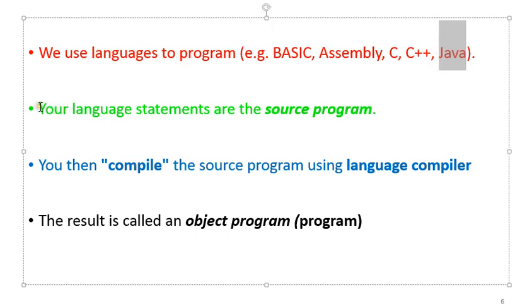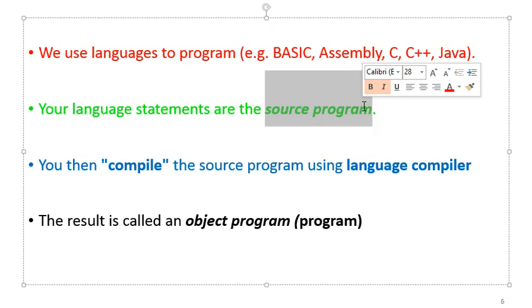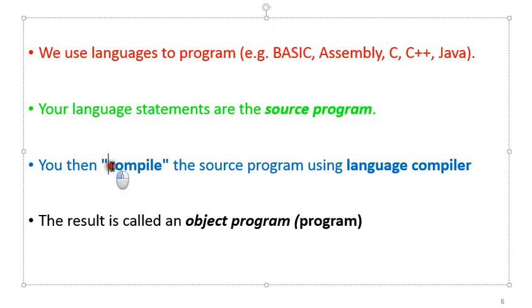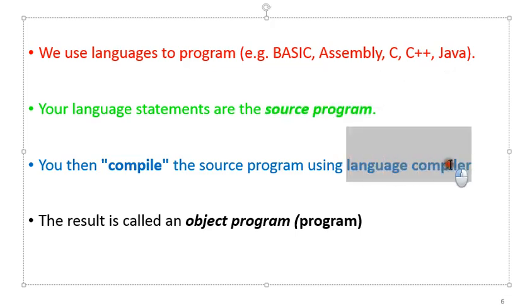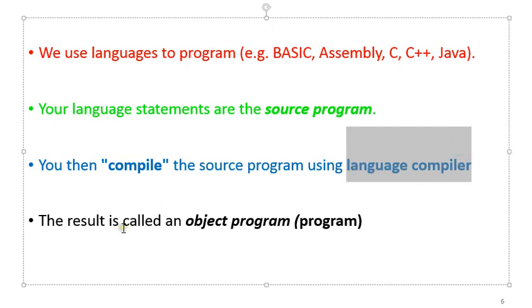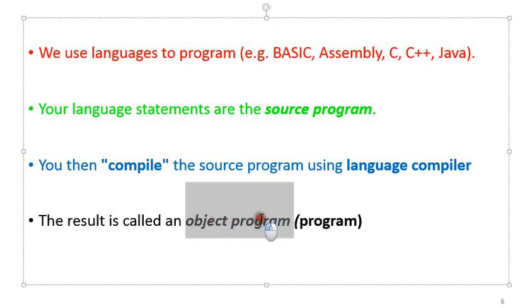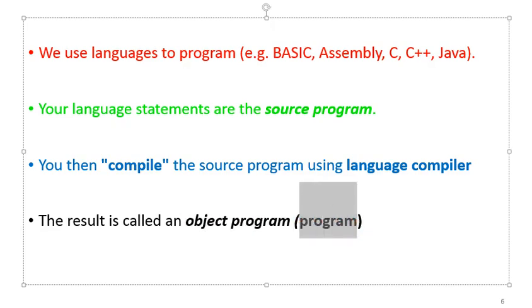The language you use for typing the program — those things you type directly — are called the source program. This source program is only understandable by the programmer; the computer does not understand it. To make the computer understand it, you do what we call compilation. You compile your source program using software called language compilers. We have different compilers for different programming languages. The result produced after compilation is a program the computer can understand, called an object program.